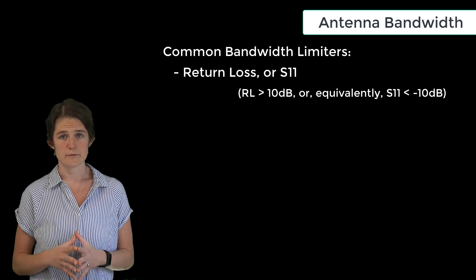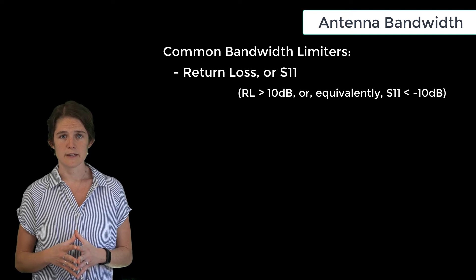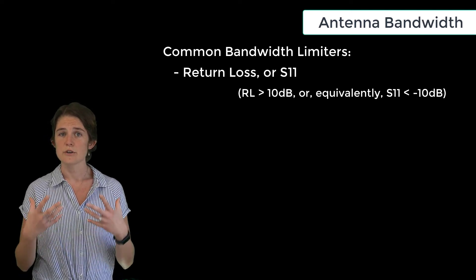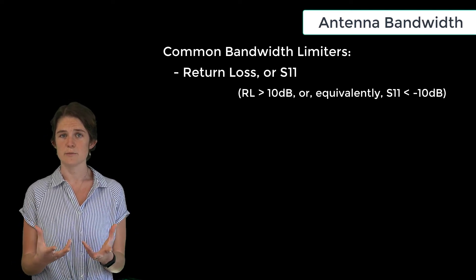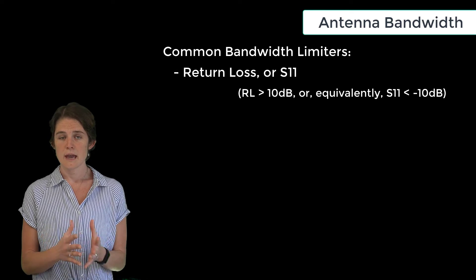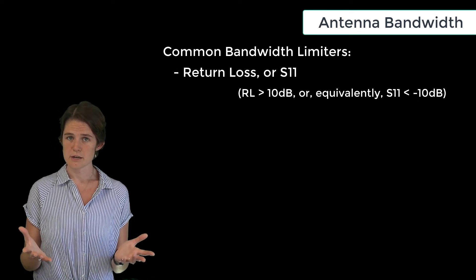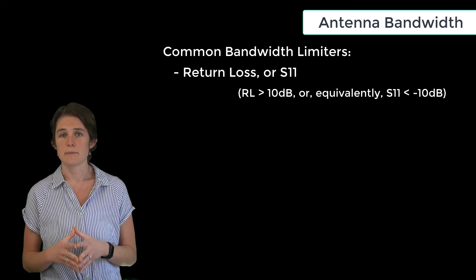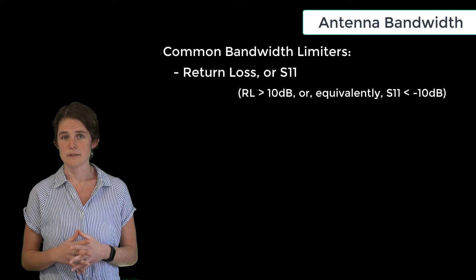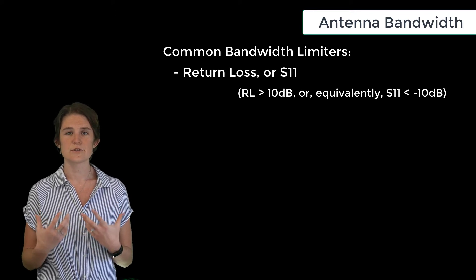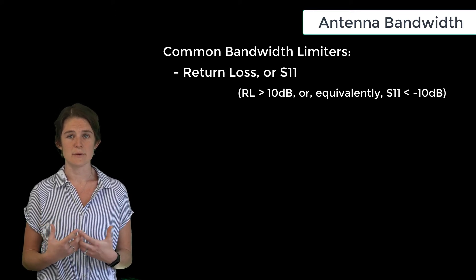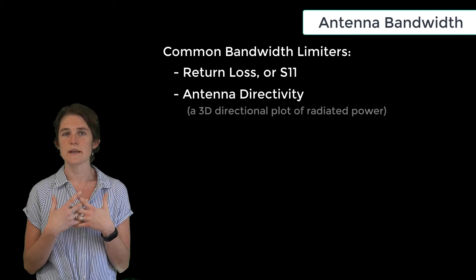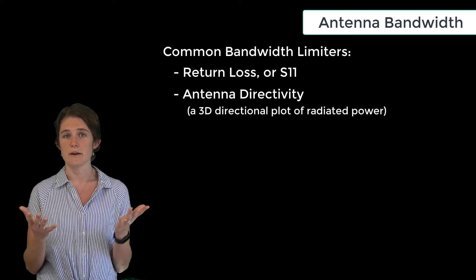Return loss is only one option for defining the bandwidth of an antenna. There are many other antenna figures of merit which are used to judge antenna performance, and any one of them — or any combination of them — might be used to define bandwidth in any given situation. One such critical antenna parameter is antenna directivity, which is a 3D directional plot of radiated power.